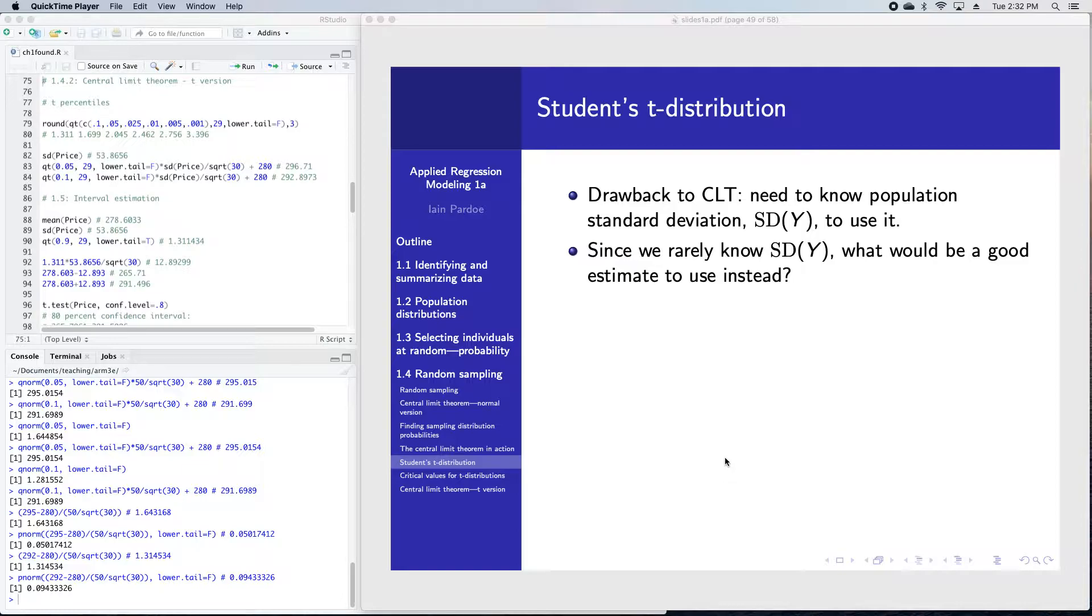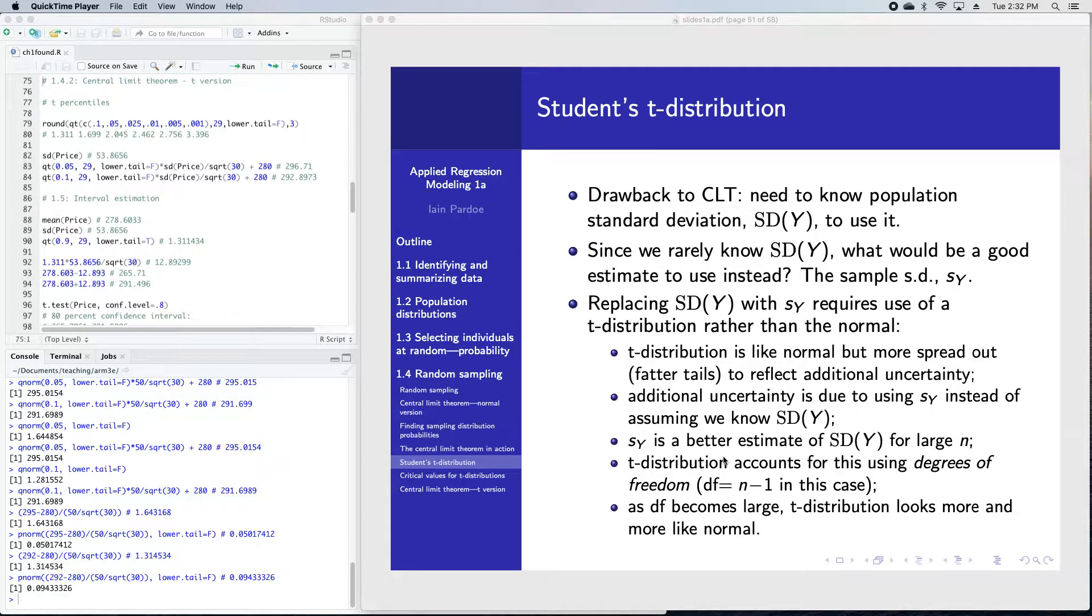So if we don't know the population standard deviation, then it's reasonable to use the sample standard deviation to estimate it. What happens to the central limit theorem if we do that? If we replace the population standard deviation that was in that theorem with a sample standard deviation.